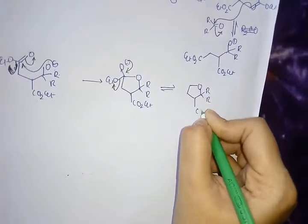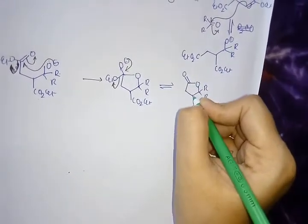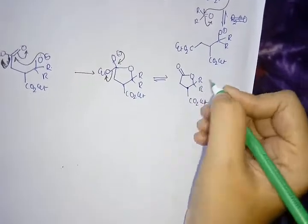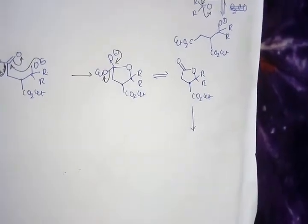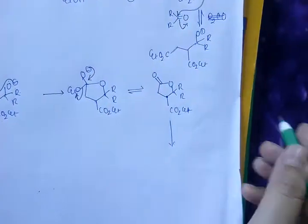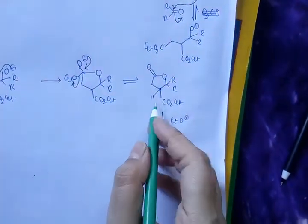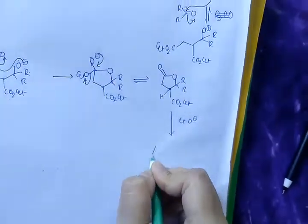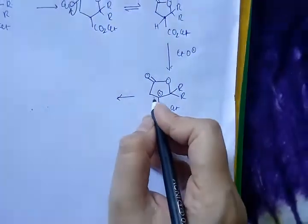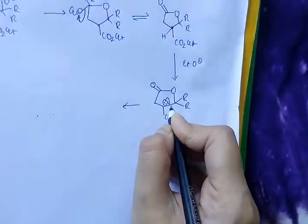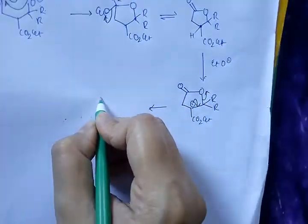Here another acidic hydrogen is present. This is another acidic center. Now in presence of base this hydrogen will be captured and here again negative charge will form. Then carboxylate salt will form and the compound.